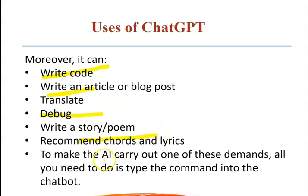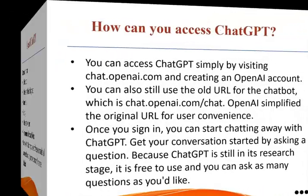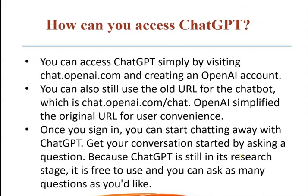To make the AI carry out these demands, you simply ask the chatbot in the chat box. You can use it by visiting chat.openai.com and creating an OpenAI account. You can still use its old URL, chat.openai.com/chat. OpenAI simplified the original URL for user convenience.